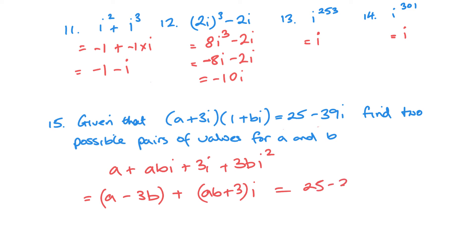So a minus 3b plus, let's put the ab plus 3i in there. So there's my real, there is my imaginary from here. And they've got equal 25 minus 39i. And that's what's important. Now I can set up my two equations. So that's a minus 3b equals 25. And ab plus 3 equals negative 39.